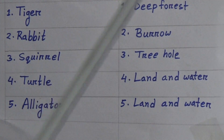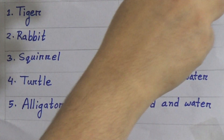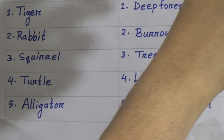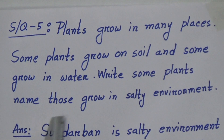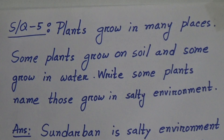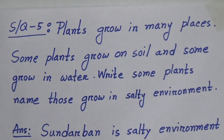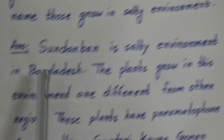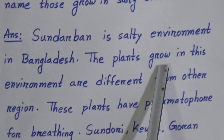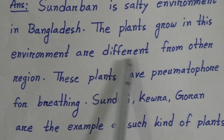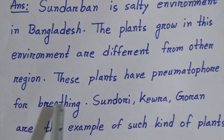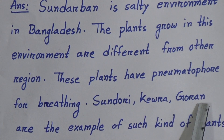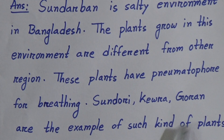Short question five: plants grow in many places — some grow on soil and some grow in water. Name some plants that grow in a salty environment. Answer: the Sundarbans is a salty environment in Bangladesh. The plants that grow in this environment are different from other regions. These plants have new adaptations for breathing. Shunduri, Keora, and Goran are examples of such plants.